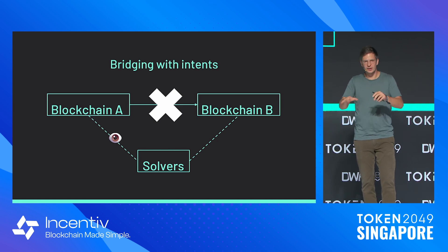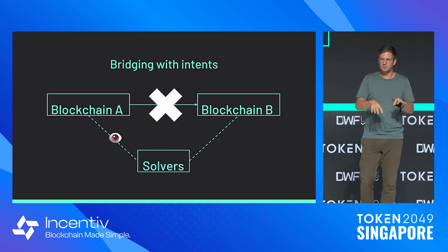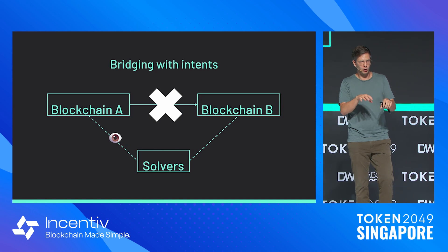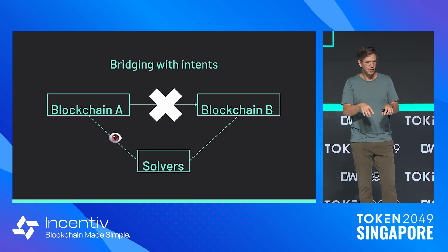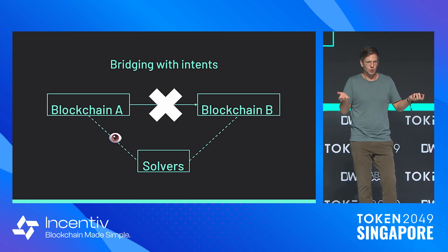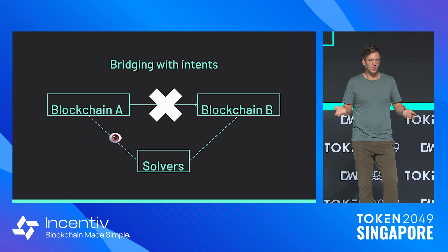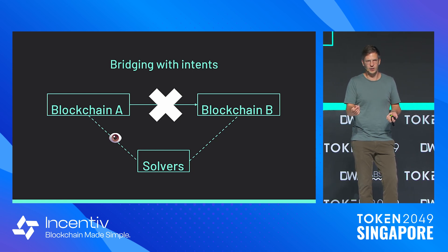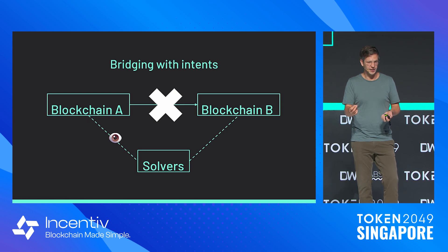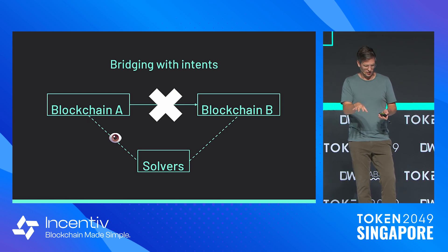This isn't set up for a demo, but you could go to across.to and try bridging a few hundred bucks between your favorite L2s — it'll take two seconds. The median bridge time for ACROSS right now is three seconds. We are extremely fast simply because of this architecture, and it's also really cheap.